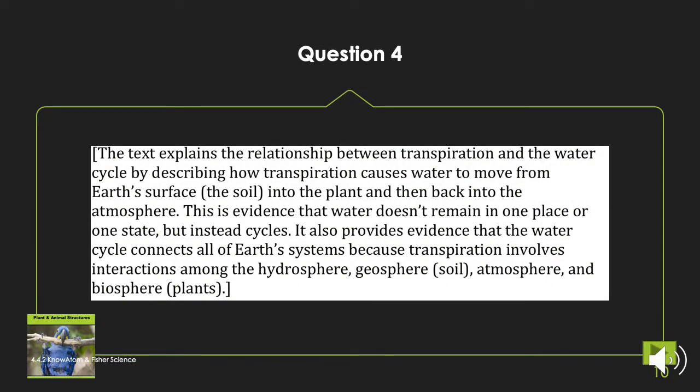So the text explains the relationship between transpiration and the water cycle by describing how transpiration causes water to move from Earth's surface, the soil, into the plant and then back into the atmosphere.